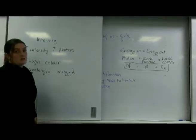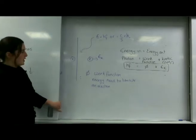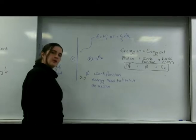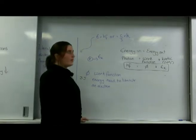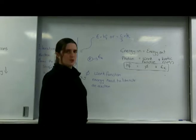This means that if we go back to my situation here, my work function is still 3 joules. But instead of 10 joules, my light is only going to emit 6 joules because it has a bigger wavelength.